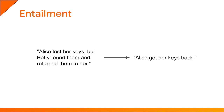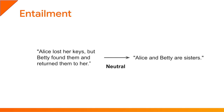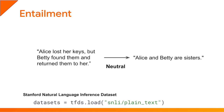Another NLP task is entailment — figuring out whether one sentence entails another, contradicts it, or is neutral. For example, the sentence 'Alice lost her keys, but Betty found them and returned them to her' entails 'Alice got her keys back,' but contradicts 'Alice lost her keys forever,' and is neutral with regards to 'Alice and Betty are sisters.' Stanford University built a great dataset for this called the Stanford Natural Language Inference Dataset, or SNLI, which you can load easily using TensorFlow Datasets.